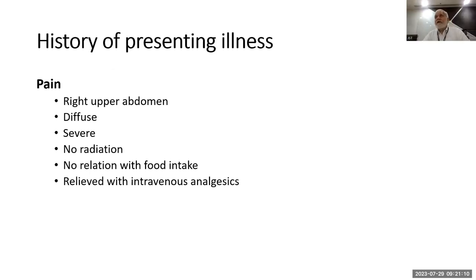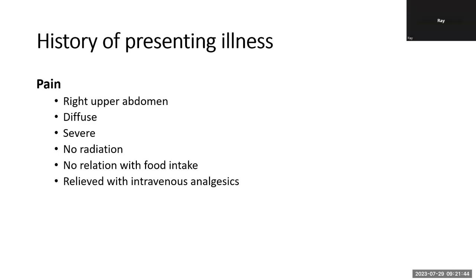Regarding radiation of pain — you should specifically state where you asked for radiation: whether to the back, to the shoulder, or to the back of the right chest. Even negative history should be specific. Similarly for relation with food intake, you should specify whether you are asking for aggravation or relief depending on what you are thinking. If thinking of biliary colic, say 'no history of aggravation with heavy fatty meal.' If thinking of peptic ulcer disease, ask whether food aggravates or relieves. The negative symptoms tell the examiner what is going on in your mind.